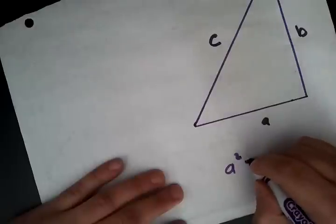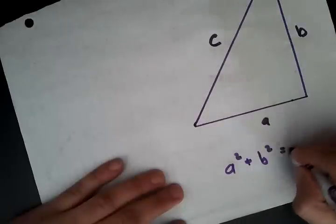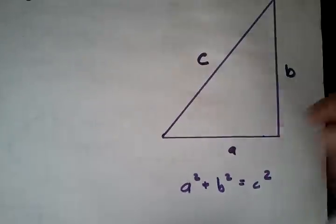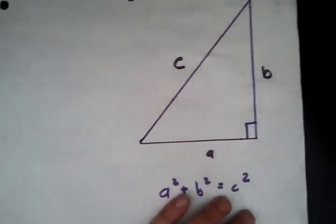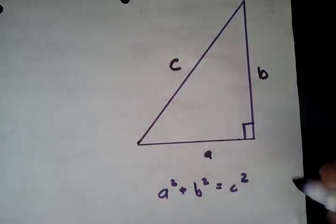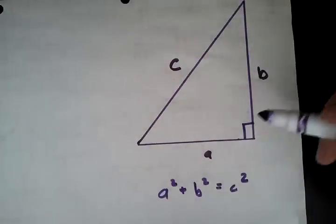And the Pythagorean theorem says essentially A squared plus B squared equals C squared. That is, if we know two sides of a right triangle, then we know the third side because the hypotenuse squared equals the sum of the squares of the two legs.